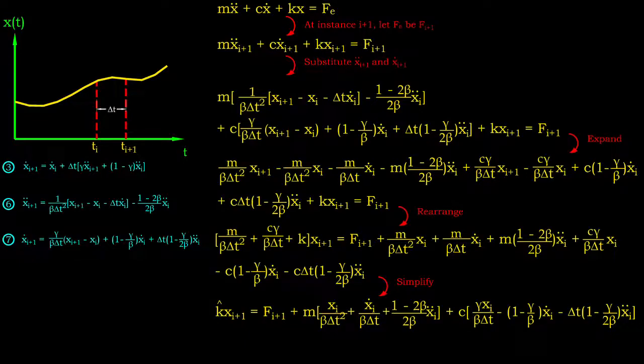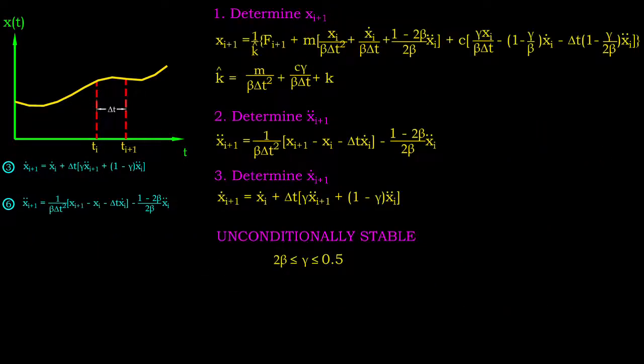At this point, perhaps we can introduce a constant called effective stiffness to replace the coefficient of x i plus 1. The displacement response at the next instance can be determined by implementing Hooke's law. From the solution yielded, we can predict the displacement response of the next instance using only current instance displacement and next instance external force.